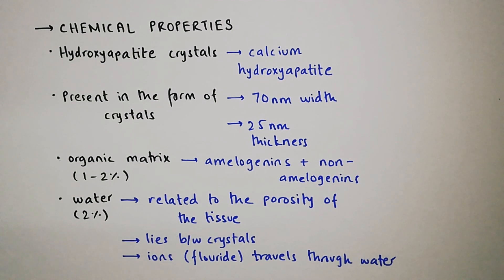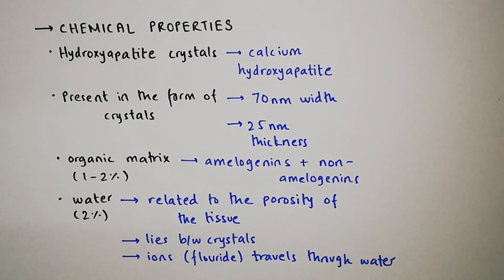The organic matrix, which is around 1 to 2% by weight, consists of two major proteins: amelogenins and non-amelogenins. Water, which is around 2% by weight, is related to the porosity of the tissue and lies between the crystals and the organic matrix. Ions like fluoride, which are essential for the maintenance of the structure of enamel, travel through the water.